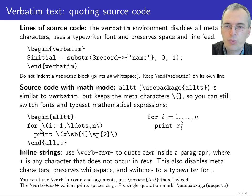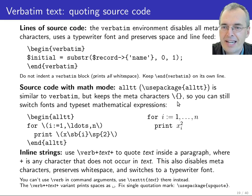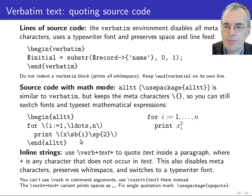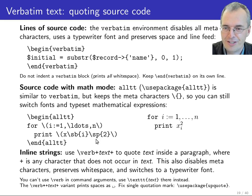Math mode can be switched into with a dollar sign or with backslash round parenthesis. In alltt, the dollar sign has lost its meta character functionality but the backslash has not, so you use the backslash round parenthesis notation to switch into math mode. In math mode you normally use underscore and circumflex for subscripts and superscripts, but in alltt mode you must use the backslash sp and backslash sb macros instead.